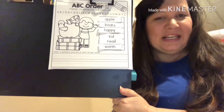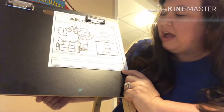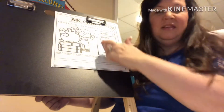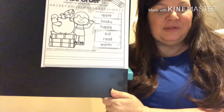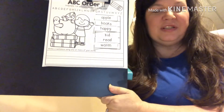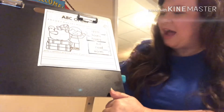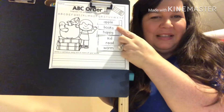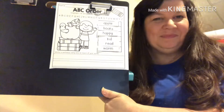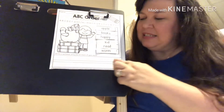There's one last thing that we need to do on this page. Down here it says: write a sentence using one or more of the words that you put in ABC order. So we have to come up with a sentence using as many of these words as we can. This is Mrs. Romer's sentence — how about: I like to read books with happy kids. I used four of my words in that sentence. So I would write my sentence down here at the bottom, and then that would complete my activity.